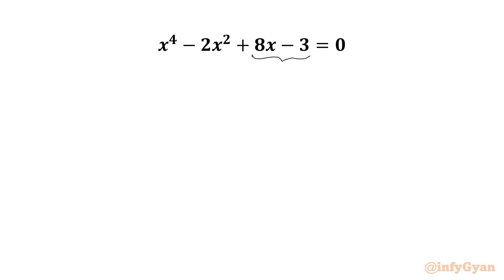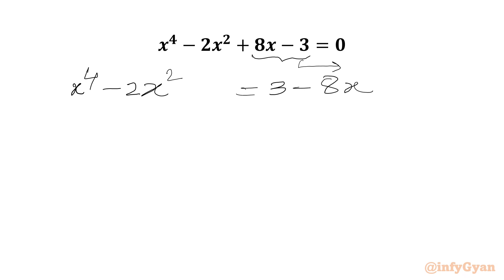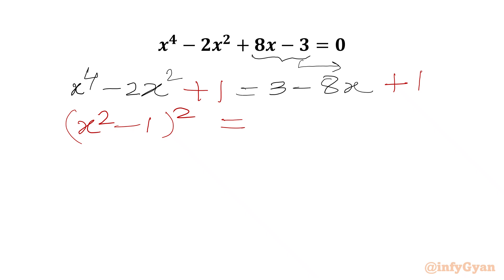I will take these two terms to the RHS. So I can write x⁴ - 2x² = 3 - 8x. Now we will use one algebraic manipulation step. We can add 1 to both sides so that the LHS will produce one perfect square of x² - 1, and RHS will be 3 + 1 = 4 - 8x.